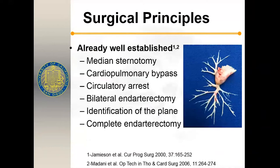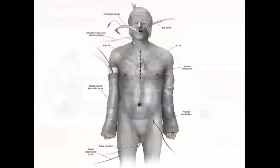You must typically do a bilateral endarterectomy — it is very rare to have disease that is purely unilateral; almost always emboli go into both lungs, and you should at least inspect both. It is very important to identify the correct plane in the tunica media to make a complete endarterectomy. You must take all the tails out — you cannot leave any, as that will still leave obstruction. Follow each tail all the way distally.